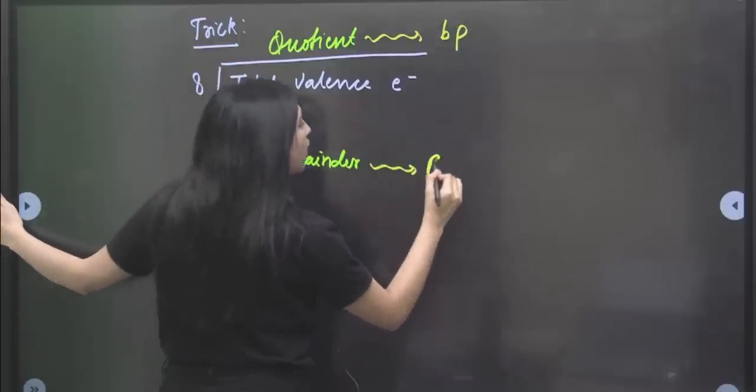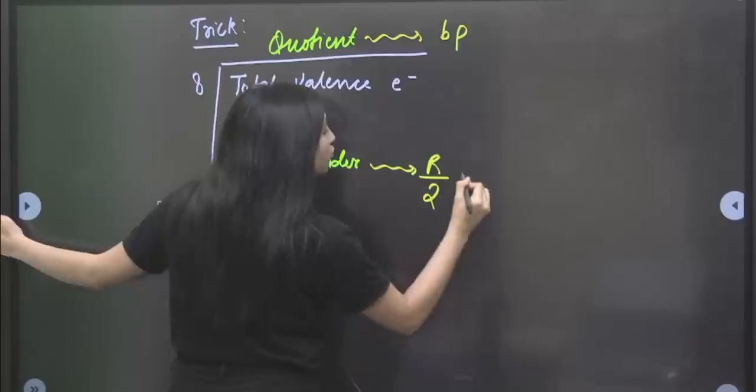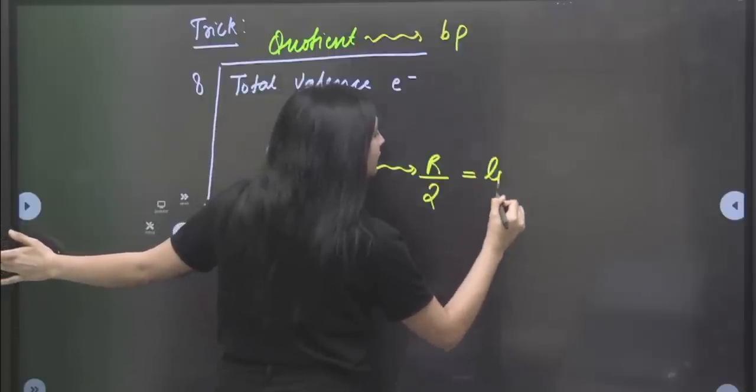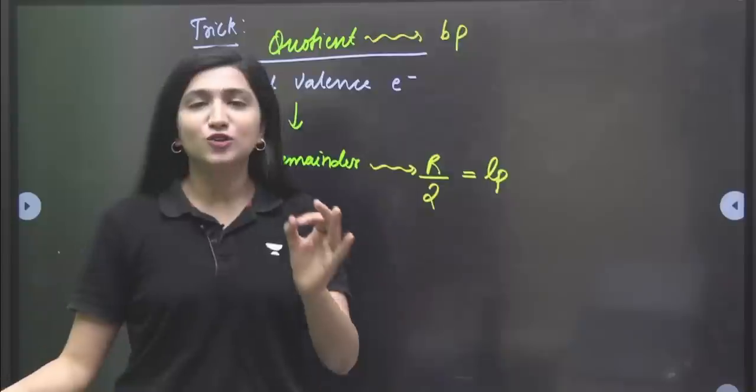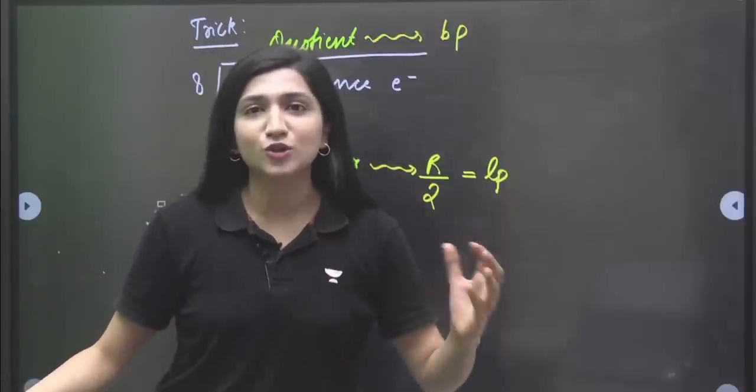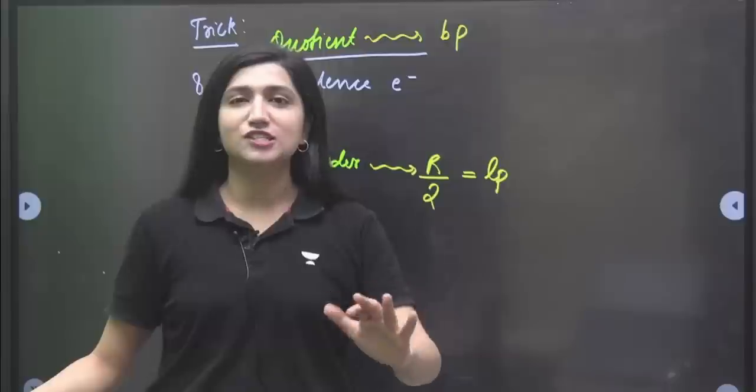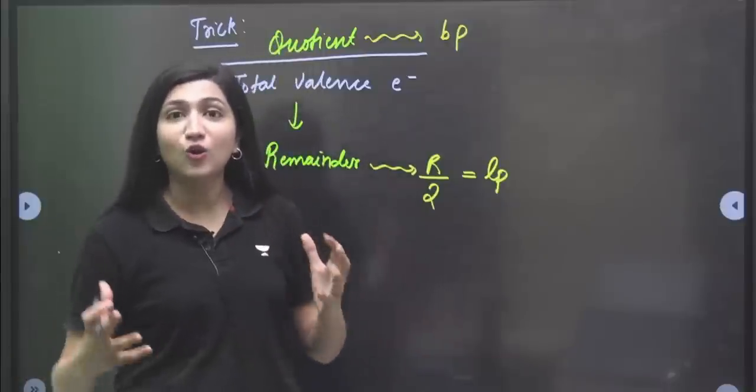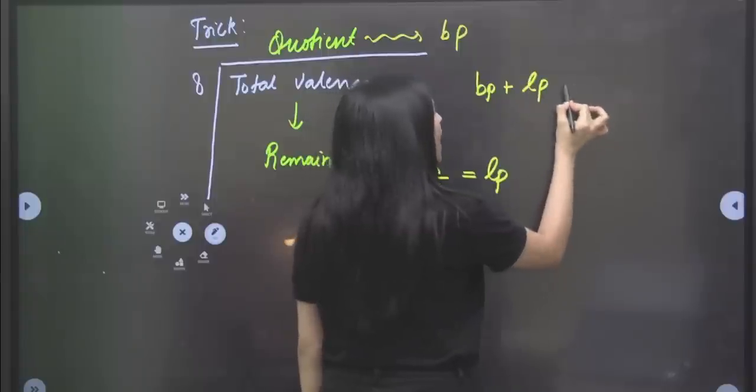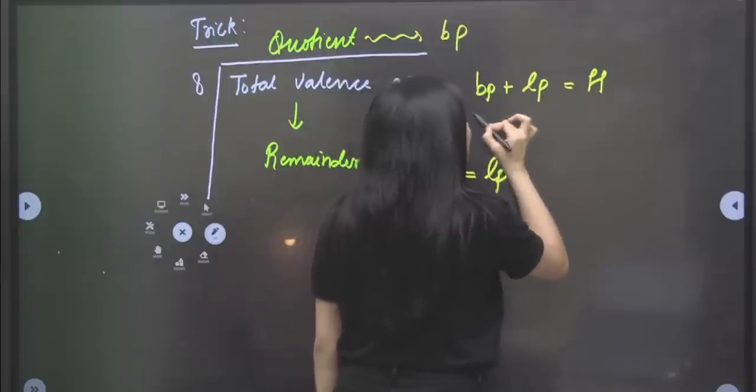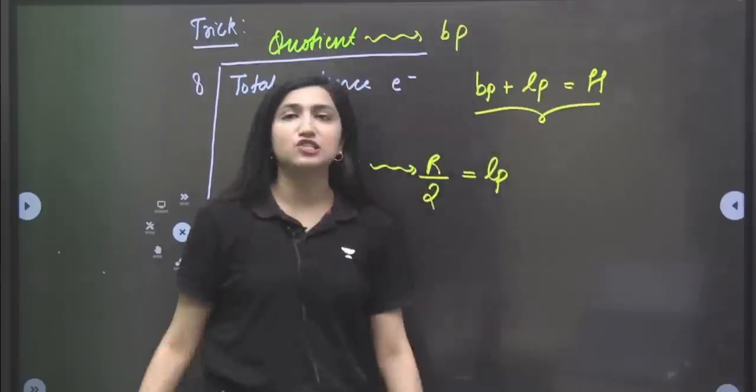In this way, divide the remainder by 2. And remainder divided by 2 gives you the number of lone pairs. So whatever remainder you get, divide it by 2. You will know how many lone pairs are in your molecule. And then bond pair plus lone pair, you will add both, and you will know what your molecule's hybridization is.